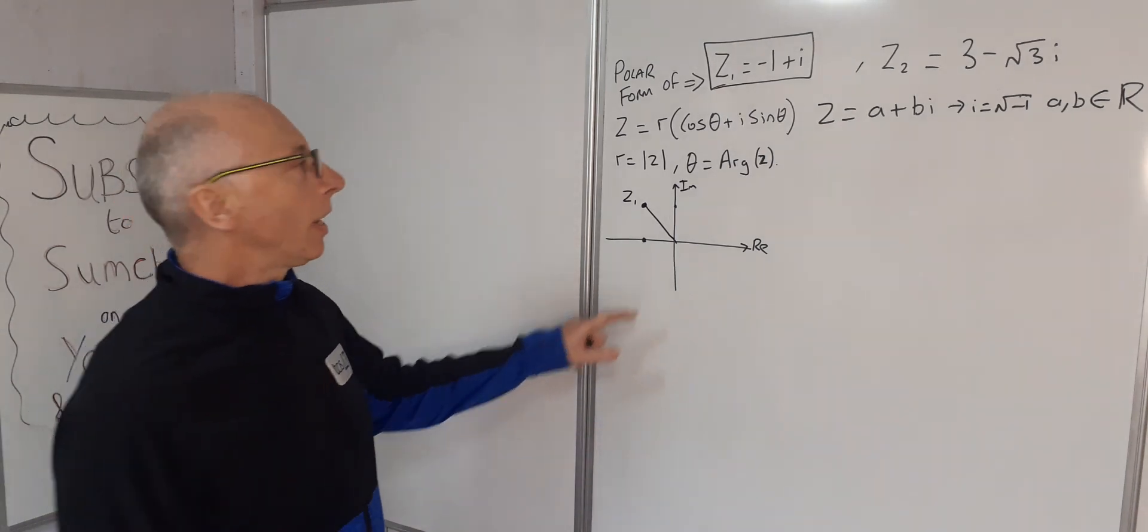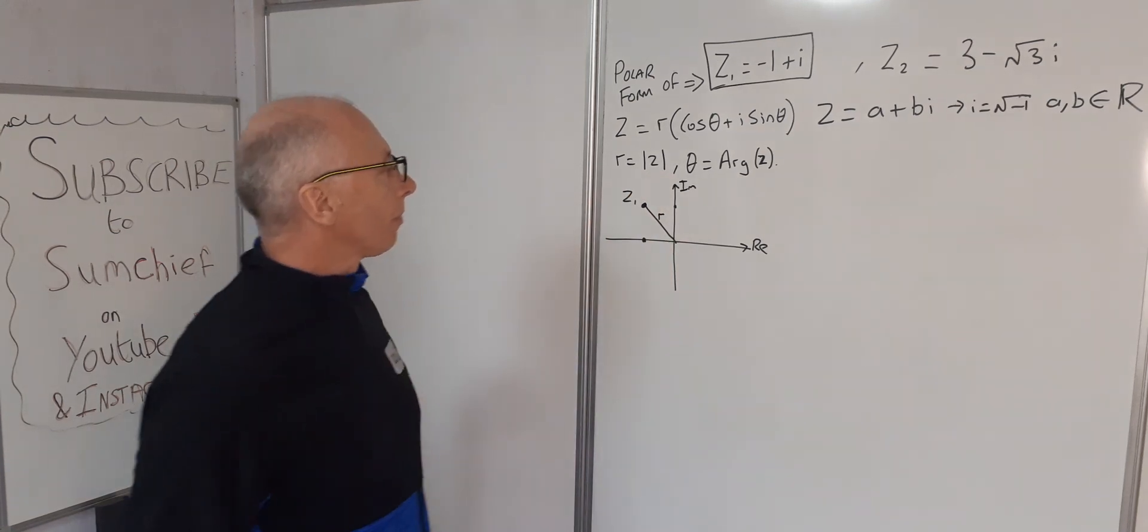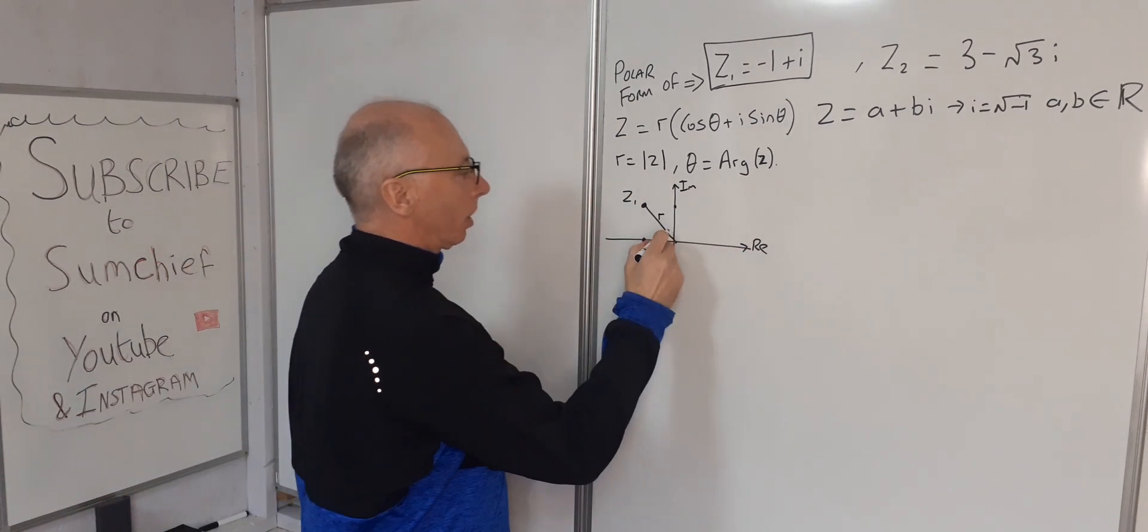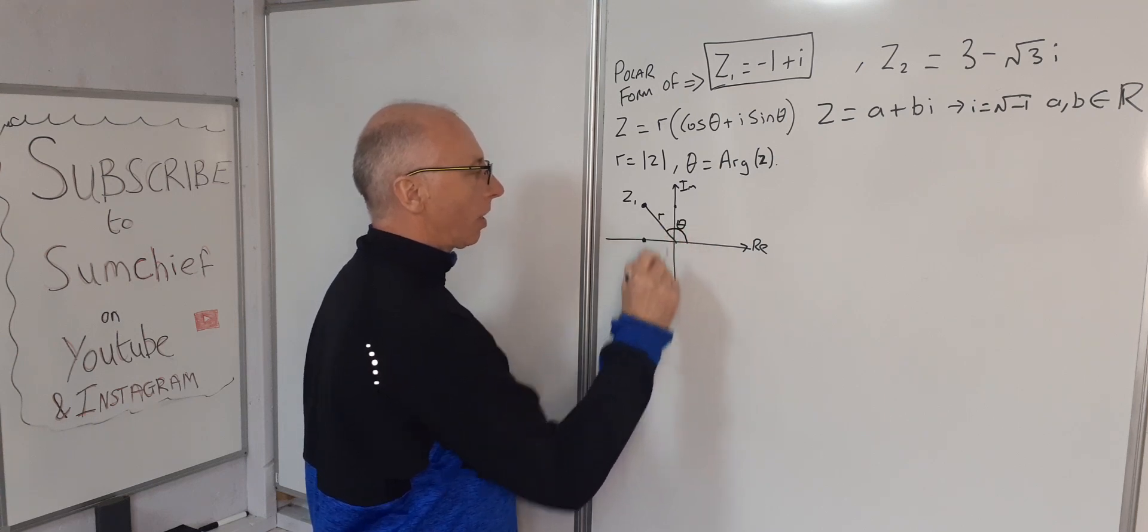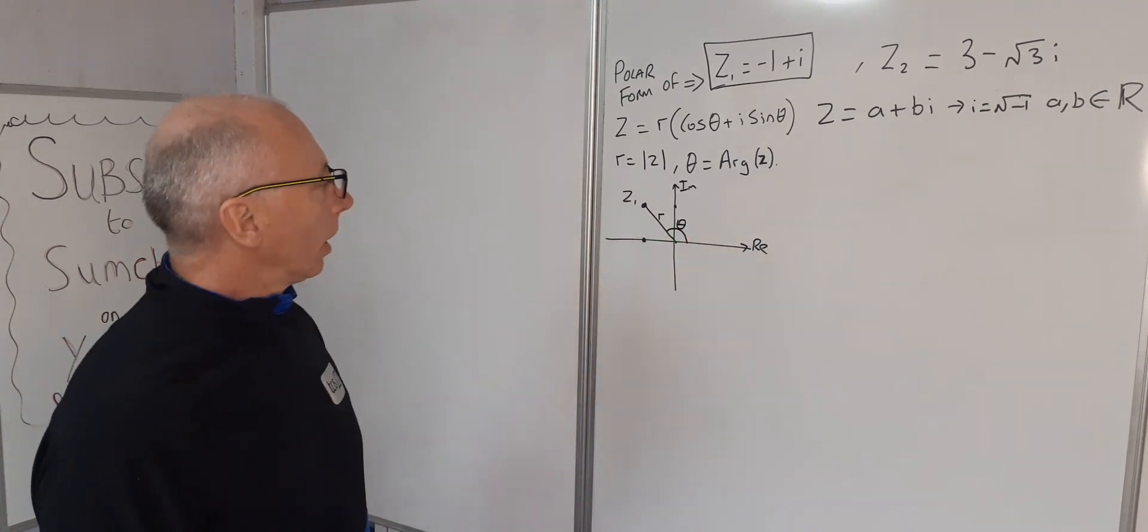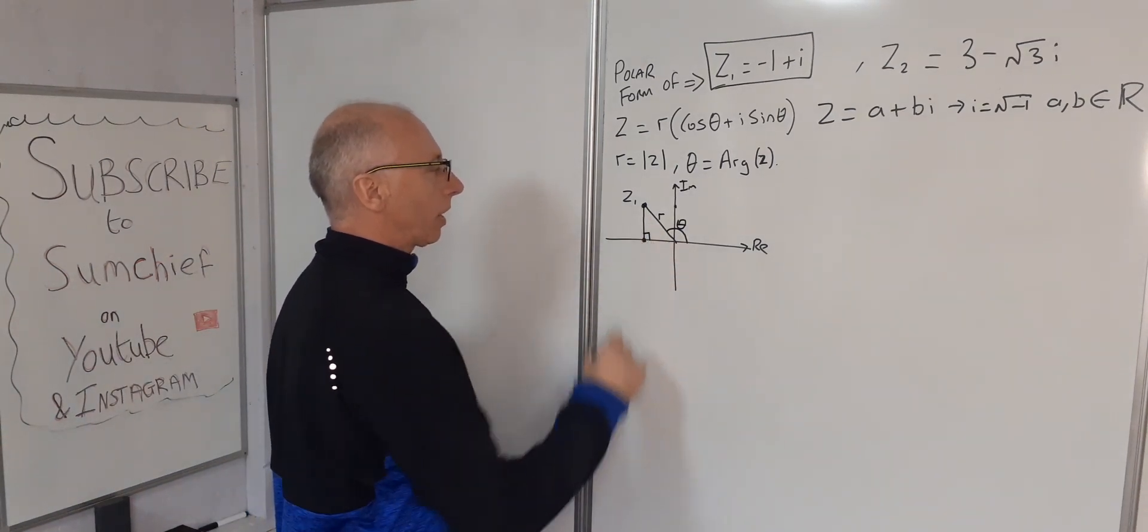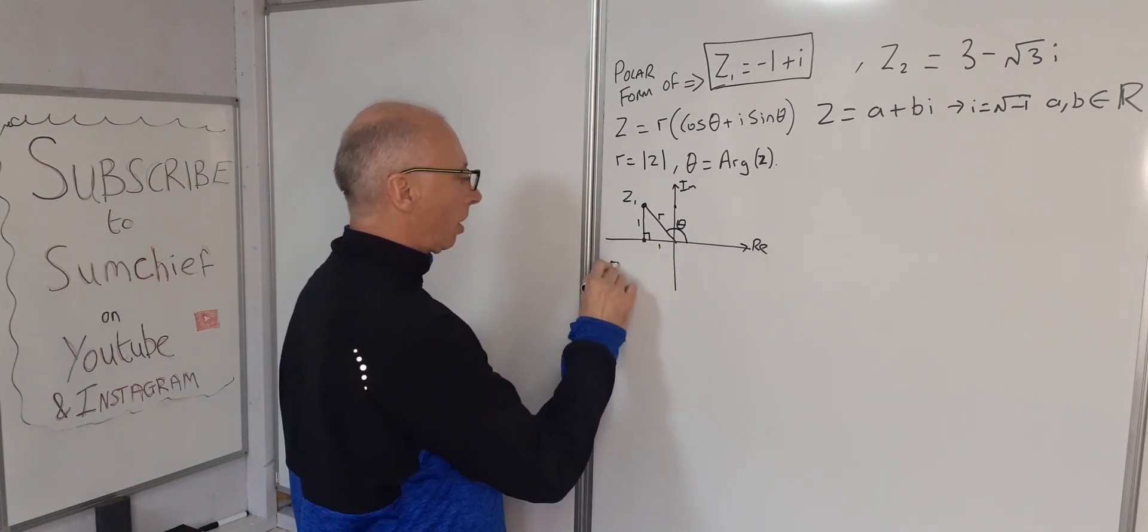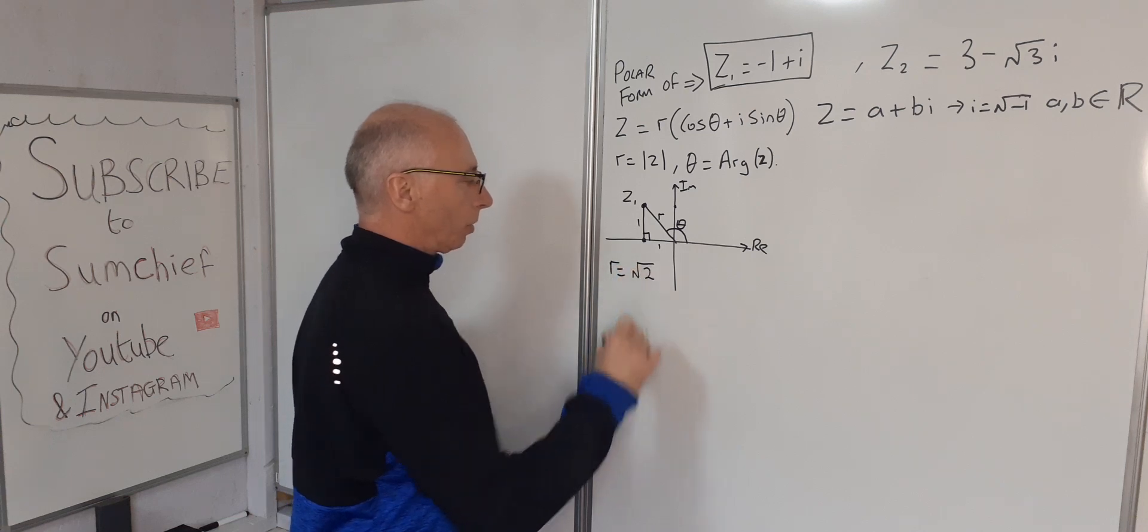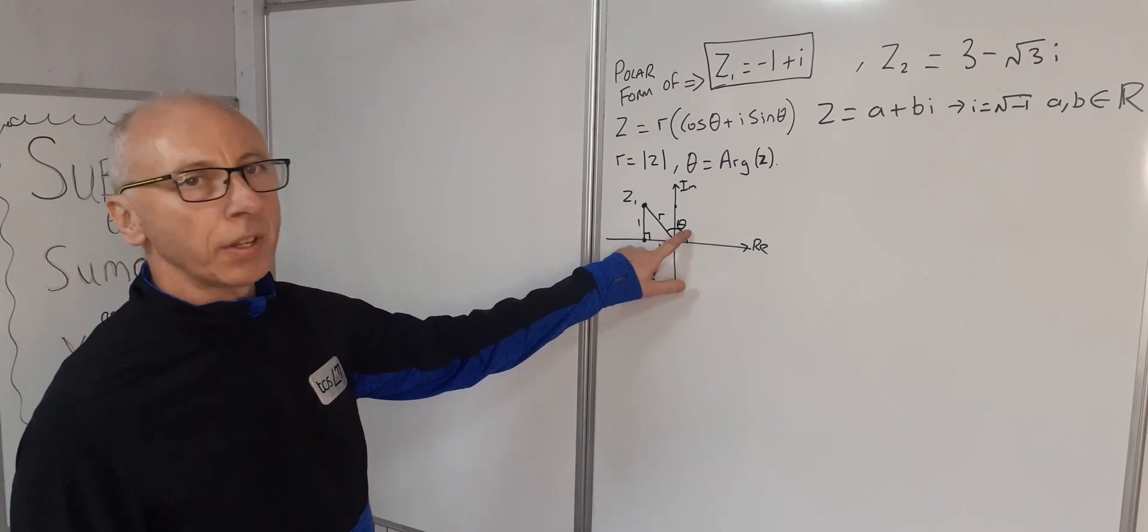What we need to find now for our r is the length of this side here, that's our modulus, and for the argument we need the angle from the positive real axis. Drawing a line here for Pythagoras, we've got side 1, side 1, therefore r = √(1² + 1²) = √2. So the radius is √2.